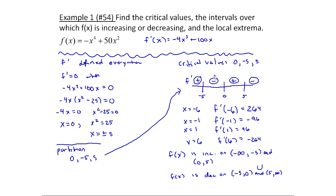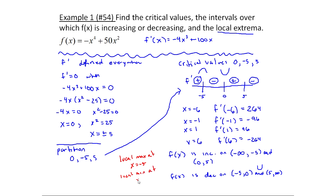We have our intervals and our critical values — now what about the local extrema? Local extrema occur only at critical values. At minus five, we went from positive to negative, meaning increasing to decreasing — that's a local max at x equals minus five. At zero, we went from negative to positive, decreasing to increasing — that's a local min at x equals zero. At five, we went from increasing to decreasing, so that's also a local max at x equals five.